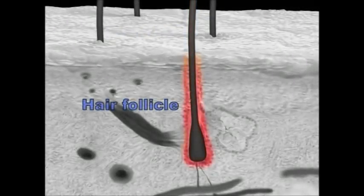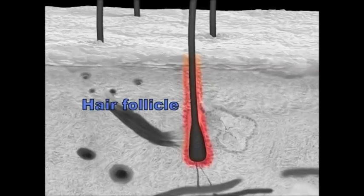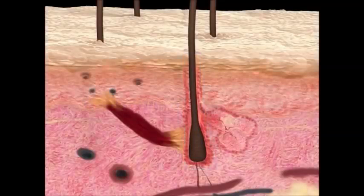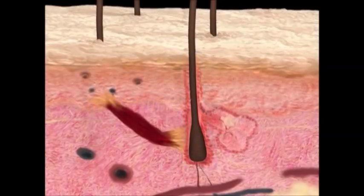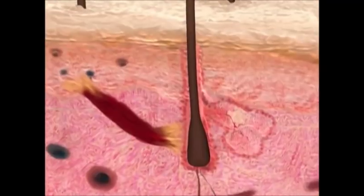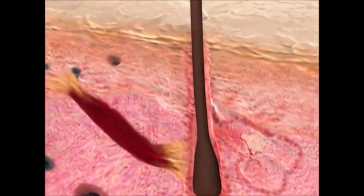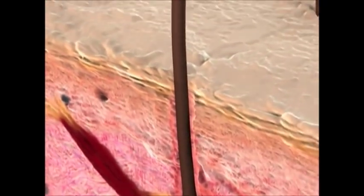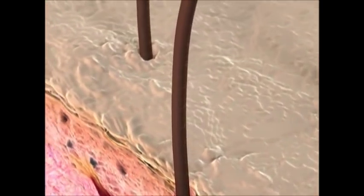The hair follicle is a tube-like depression in the skin that encases the hair root. The follicle extends downward from the epidermis into the dermis. There is a follicle for every hair, although it is not uncommon for more than one hair to grow from a single follicle.